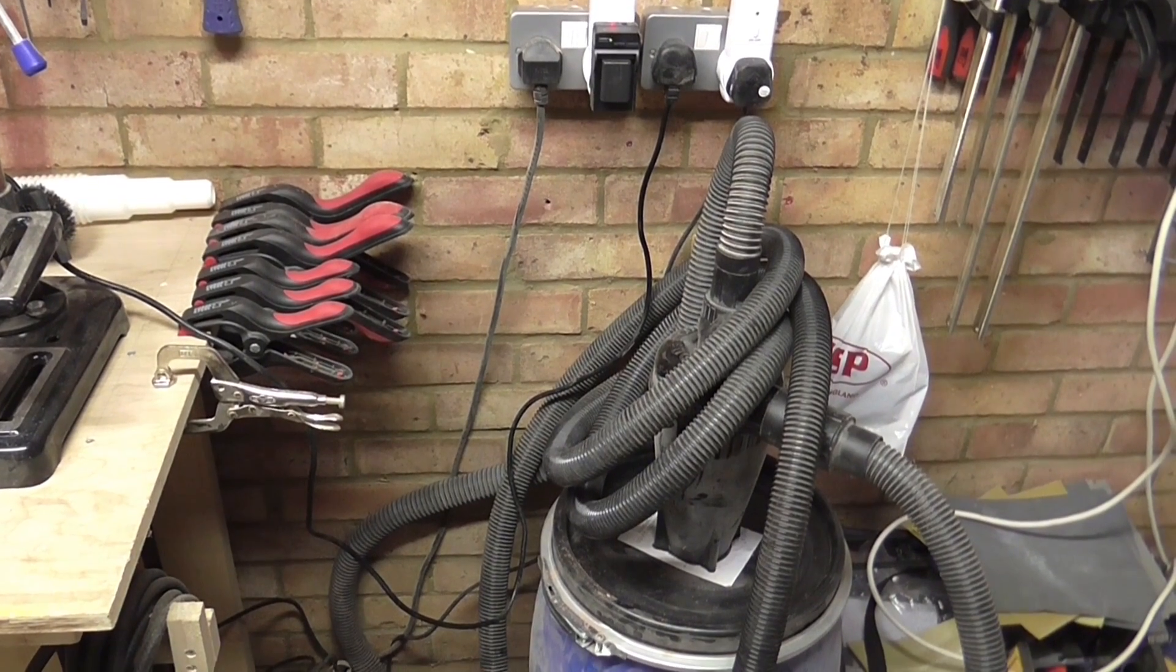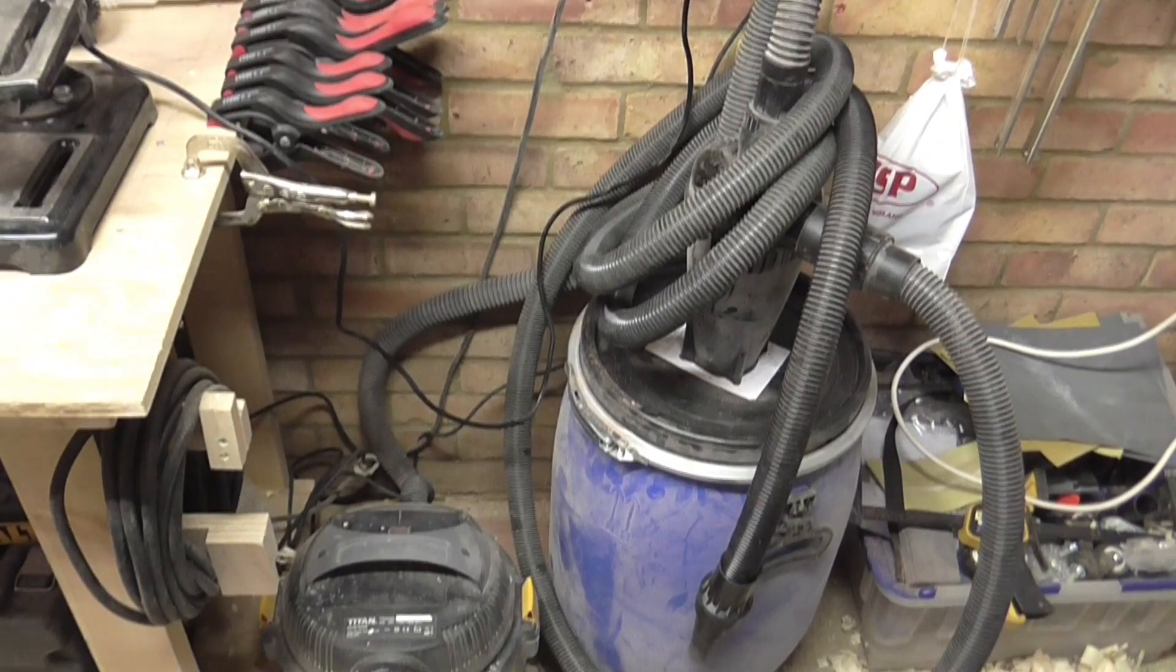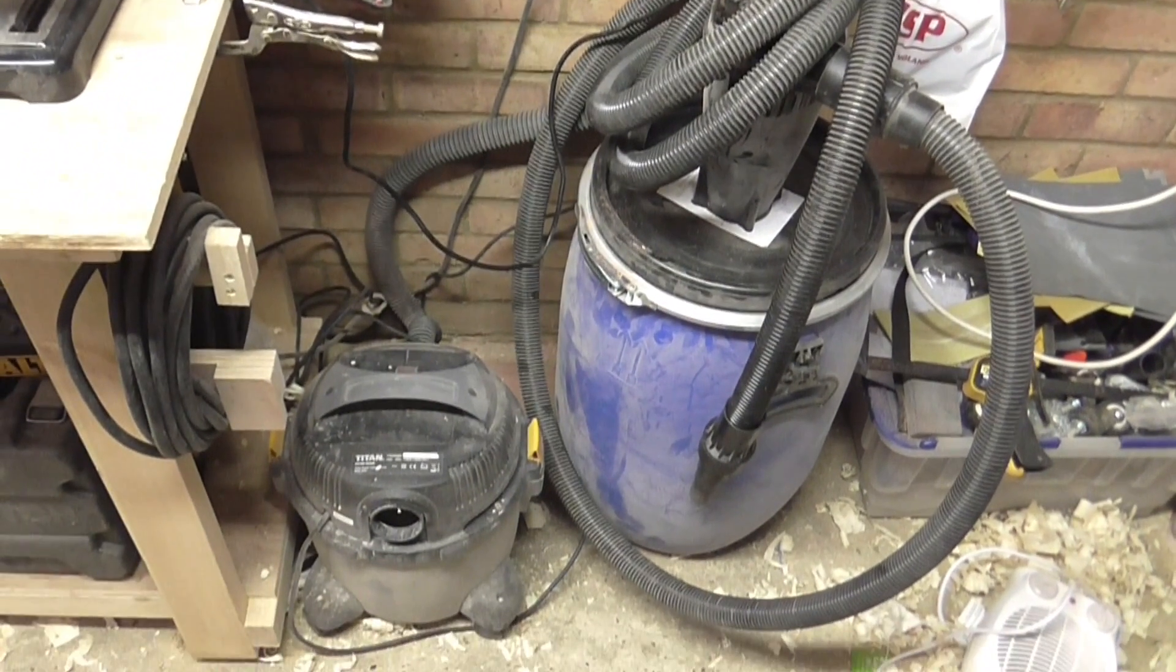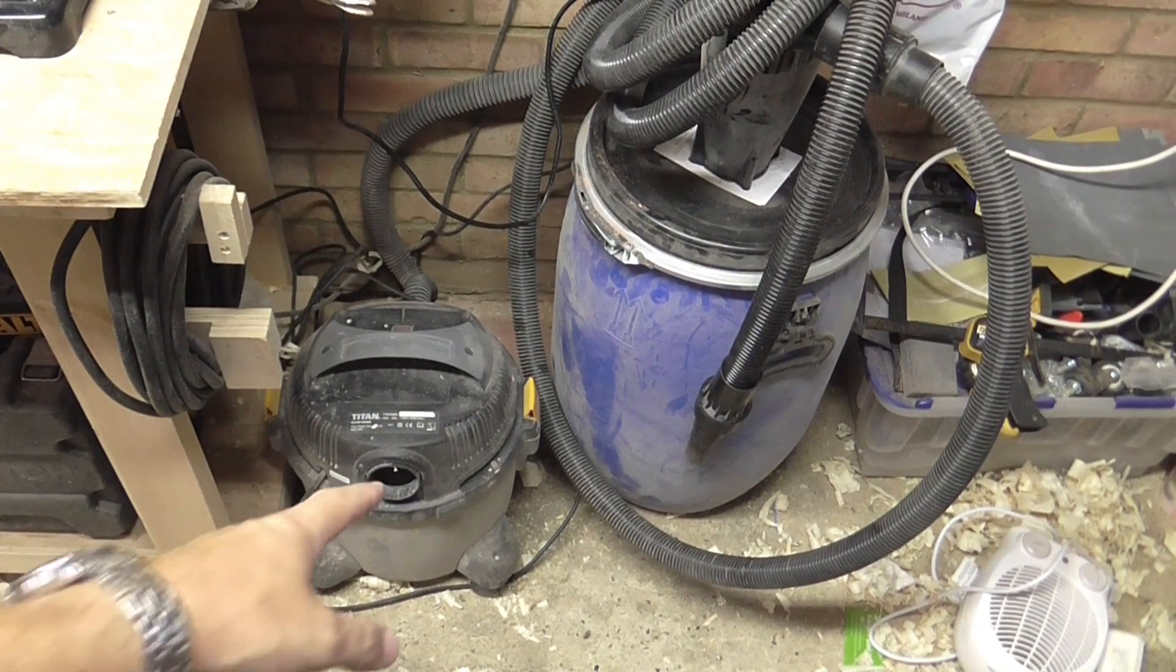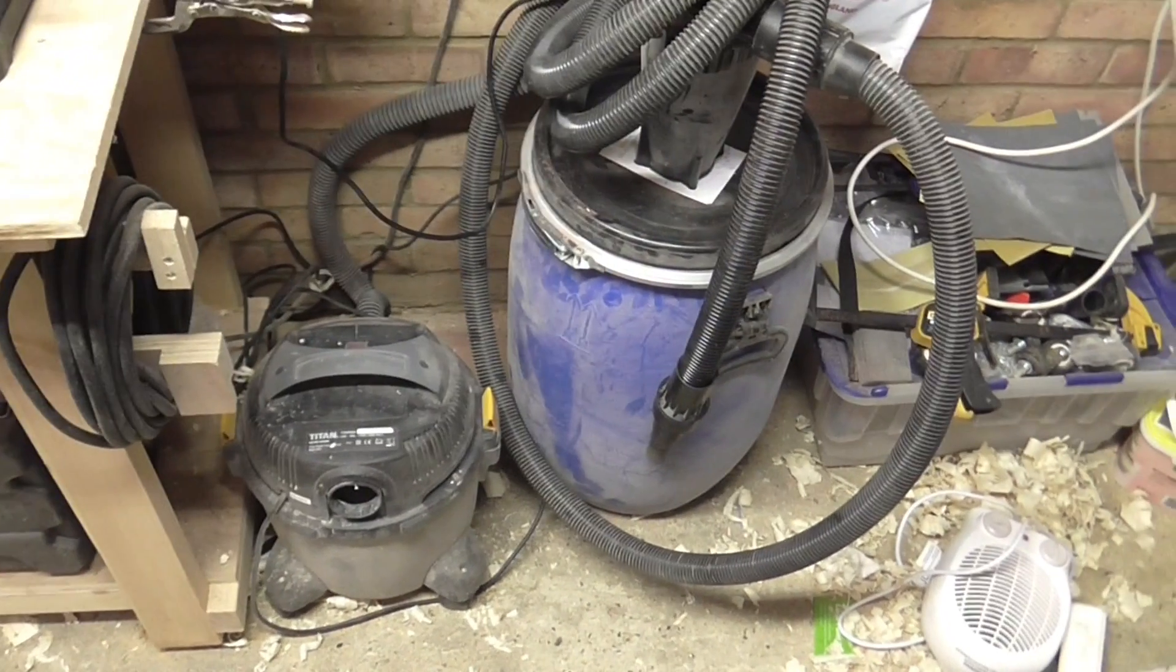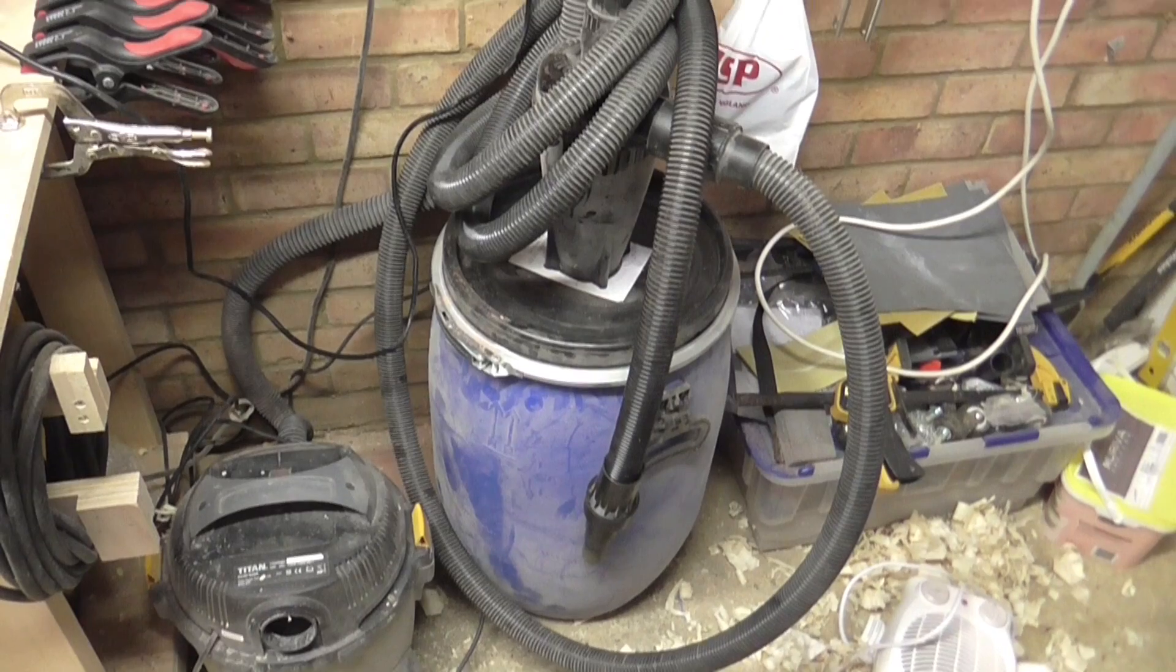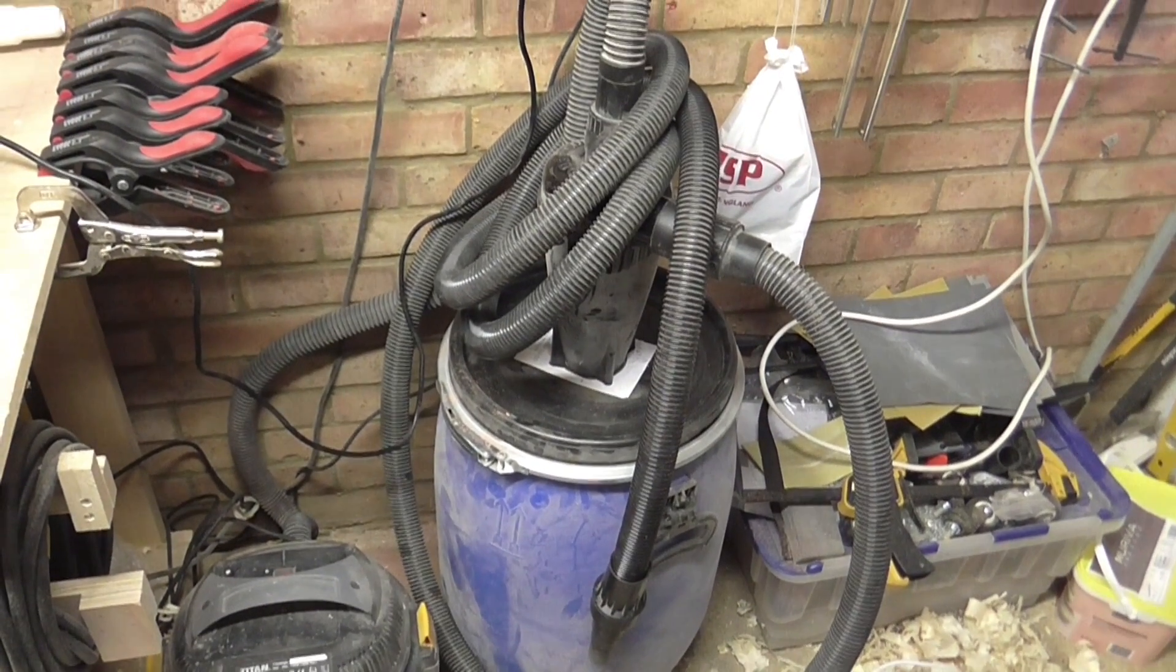This is my current dust extraction system. It consists of a small Titan vacuum cleaner attached to a cyclone on top of a large drum to collect all the sawdust.